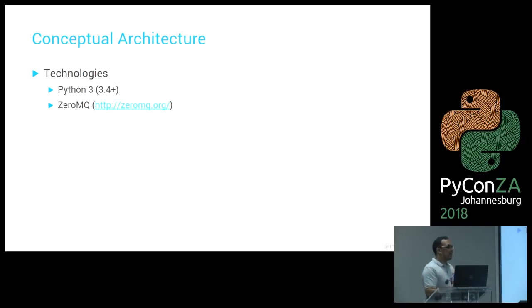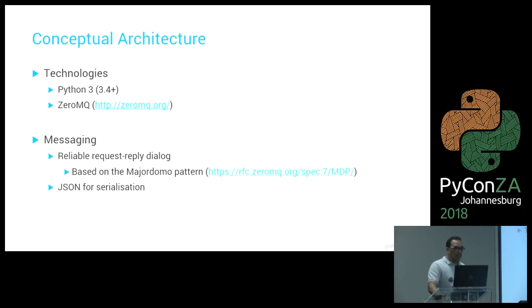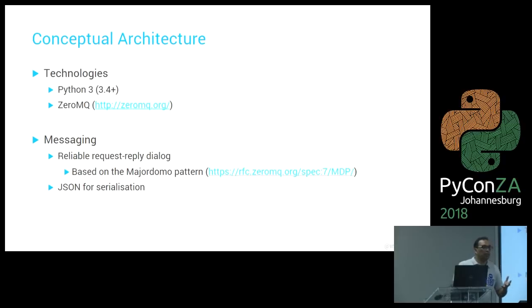We also used ZMQ — a networking concurrency library that handles all the networking bits for you, including connections, and exposes design patterns like pub/sub, pipeline, and request-reply. For messaging, we wanted a reliable request-reply dialogue — a client sends a request, gets a reply. We based it on the ZMQ Major Domo pattern and added some Career Junction flavor. For serialization we chose JSON because most languages have libraries for it, and most importantly it's readable, making it much easier to debug.